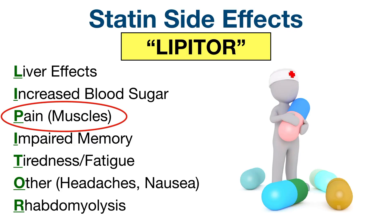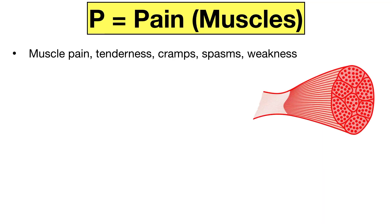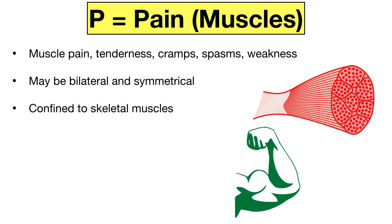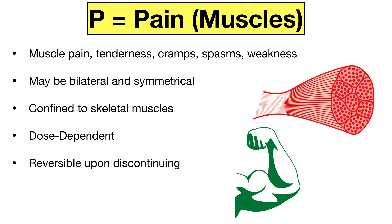The next side effect is the P in Lipitor, which stands for pain — primarily muscle pain, but also reported in joints. Some individuals may experience muscle pain, tenderness, cramps, spasms, or weakness. Muscle pain may be bilateral and symmetrical, and symptoms involve the skeletal muscles, not the cardiac or smooth muscles. This side effect is dose-dependent — the higher the dose, the greater the potential risk. Symptoms are typically reversible with discontinuation of the statin. Some studies have shown people reporting muscle pain when actually taking a placebo, so it may not be as common as reported.